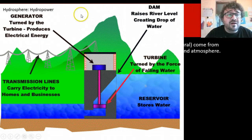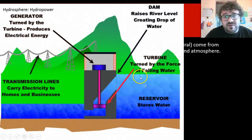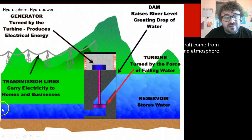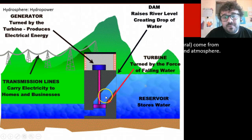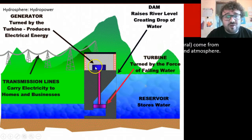Then we've got hydropower. This does have an impact on the environment, but less than other things — it's more of a localized impact. You create a dam which causes the water to rise, pushing the water through at higher pressure into a lower level river on the other side. It pushes through and turns a giant fan, which turns the turbine and the generator, producing electricity.